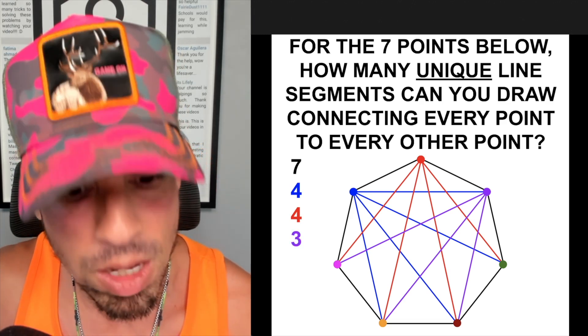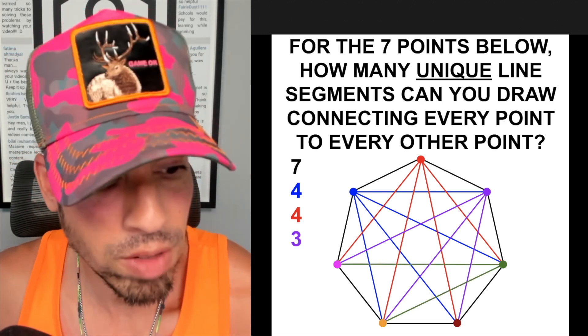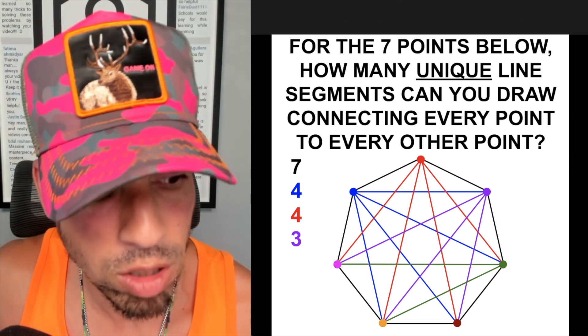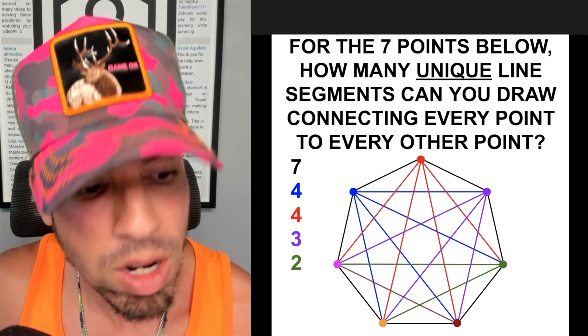So that one's done, so we're good to go. So that's only three additional segments. Now we go to the dark green, we've got one, two, and we don't even need three or four because we already got the blue line and the red line coming across. So that's just two right there.